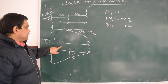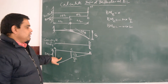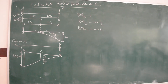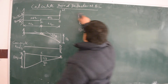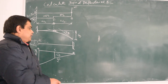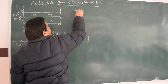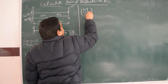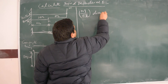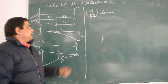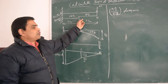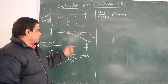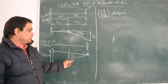This is the bending moment diagram of the actual beam, the deflected shape of the cantilever, the conjugate beam, and now we draw the M/EI diagram. Note that from C to B the flexural rigidity is EI (one time), and from C to A it is 2EI (two times), so there is a variation in the M/EI diagram.